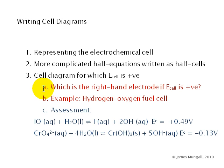So first of all we're going to have to answer the question which is the right-hand electrode if E cell is positive and therefore the other will be the left-hand electrode. Then we'll do an example with the hydrogen oxygen fuel cell. And finally, end of tutorial test or assessment, if you can use these two half equations to write the correct cell diagram for which E cell is positive, then you're doing pretty well.